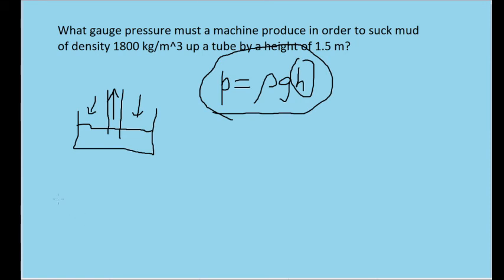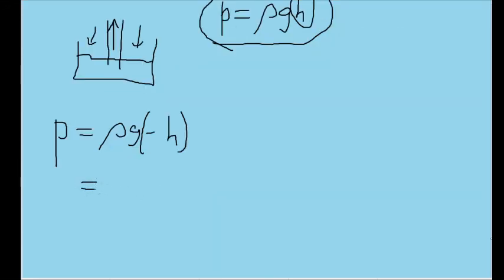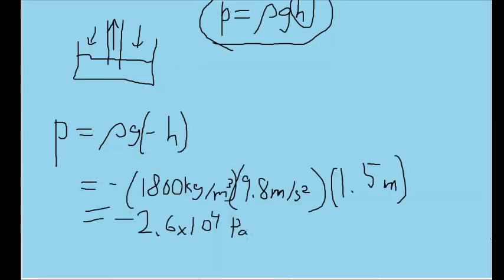So let's plug that in. In this case, our height value will be negative. Now let's plug in the values we're given. We get an answer of negative 2.6 times 10 to the fourth power Pascals.